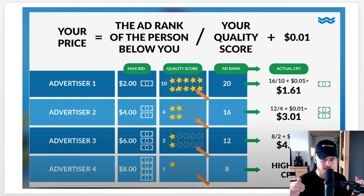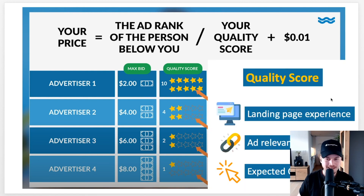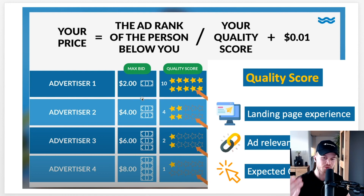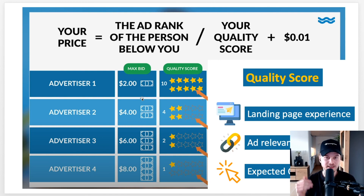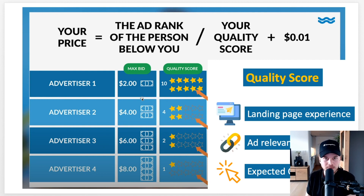The key takeaway is to increase your quality score as much as possible. You want the best landing page, the best ad relevance, and the highest expected CTR out of all advertisers. That's how you get to the front of Google search results, and you'll also pay significantly less than other advertisers — which can mean the difference between being profitable and being unprofitable. Quality score is extremely important.